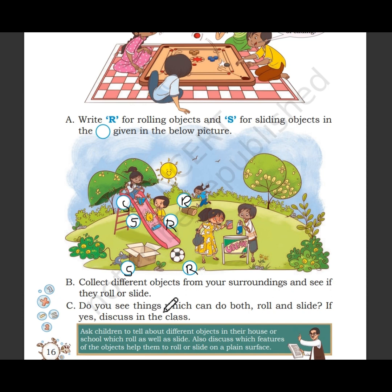Now you have to collect some objects and check whether they roll or slide. Do you see things which can both roll and slide? If yes, discuss in class. Now, some objects will only roll or only slide, but some objects can do both. For example, a water bottle — its shape has a cylindrical middle but flat top and bottom surfaces, so it can both slide and roll.